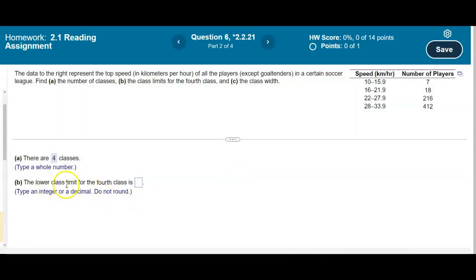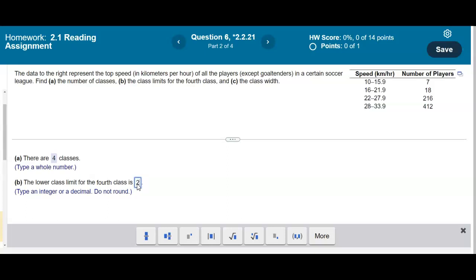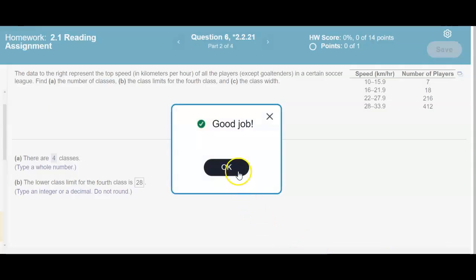Okay next, now we want to find the lower class limit for the fourth class. So which one is the fourth class? Well this is the first, this is the second, this is the third, this is the fourth class, and the lower class limit here is the number 28. So that represents the lower class limit for the fourth class.